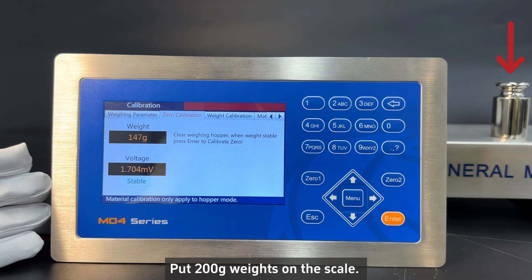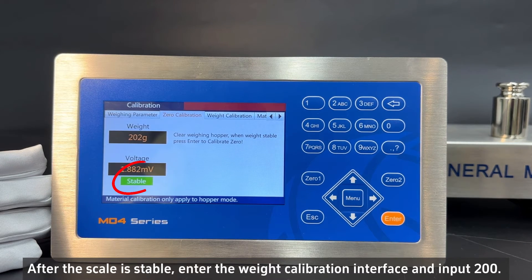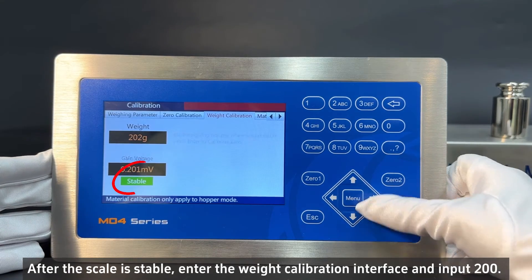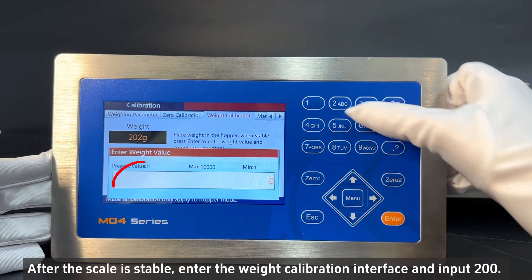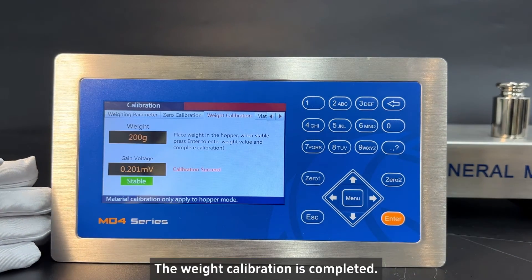Put 200 gram weights on the scale. After the scale is stable, enter the weight calibration interface and input 200. The weight calibration is completed.